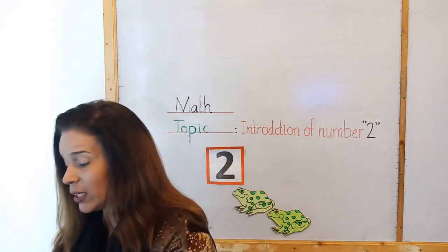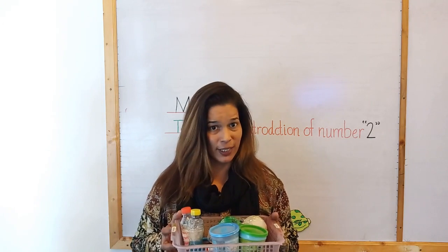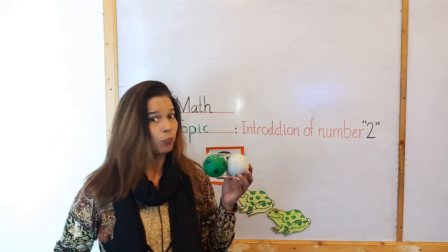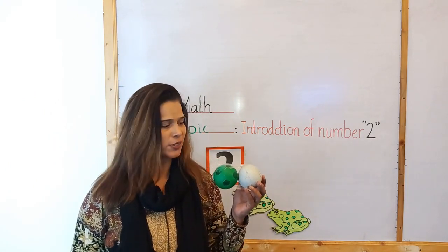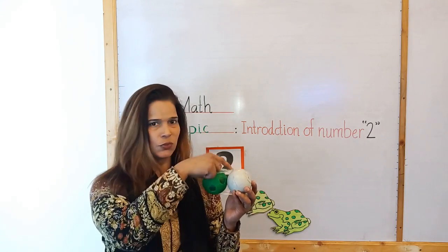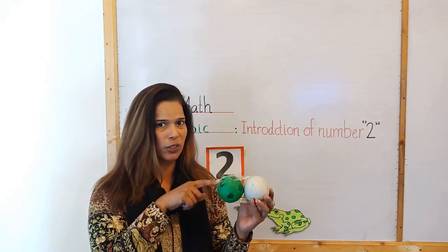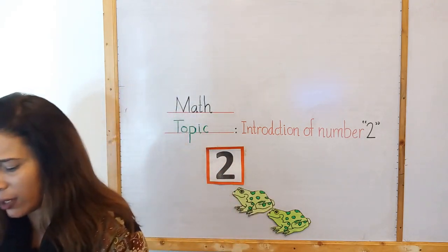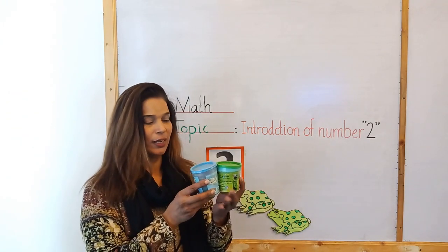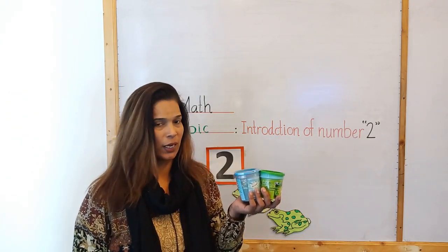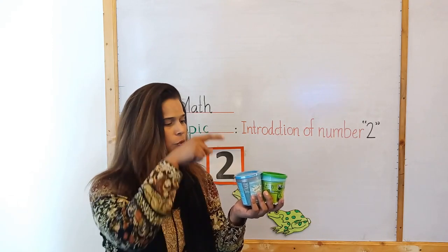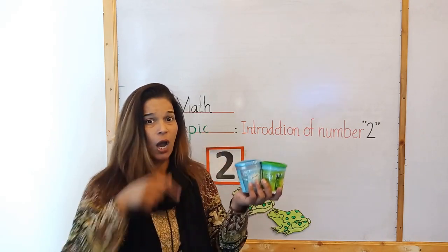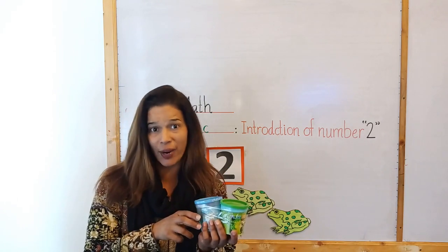Okay children, I have some things in my basket. Let's count them. What is this? These are balls. Let's count: one, two. How many balls? Two balls. Very good! What are these? These are play-dohs. How many play-dohs? Let's count: one, two. Two play-dohs. Very good!